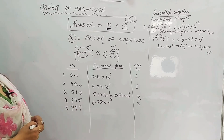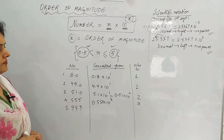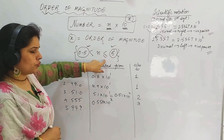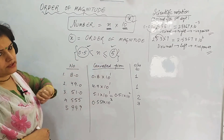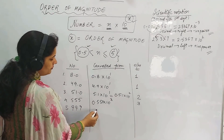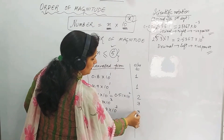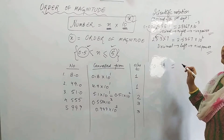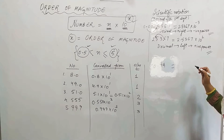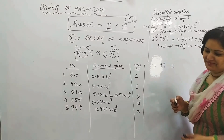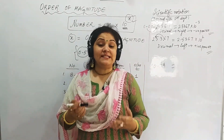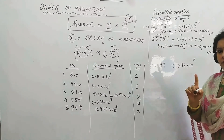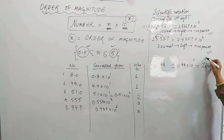Next is 999. Order of magnitude is 3. Equal to 5 can be considered — greater than 0.5 or equal to 5 is acceptable. Now take 0.99 — order of magnitude? The answer is 0, because 0.99 is already in the valid range. We can write it as 0.99 × 10⁰. Since 10⁰ = 1, the order of magnitude is 0.